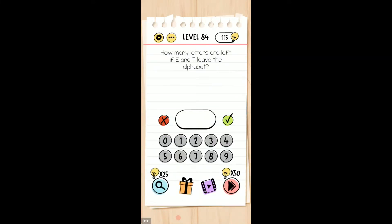Okay friends, welcome back to brain test tricky puzzle. Level 84, we're playing how many letters are left in E if E and T leave the alphabet.